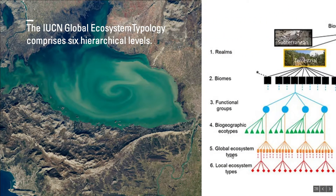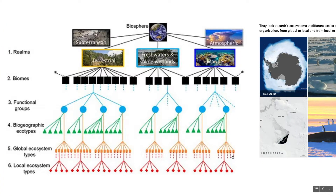The IUCN Global Ecosystem Typology comprises six hierarchical levels. The three upper levels classify ecosystems based on their functional characteristics, such as the structural role of foundation species, water regime, climatic regime, or food web structure. The three lower levels focus on species composition and features that are regionally and locally important.